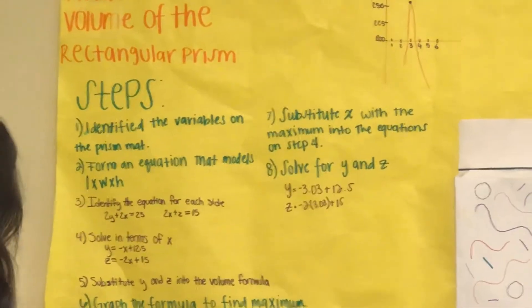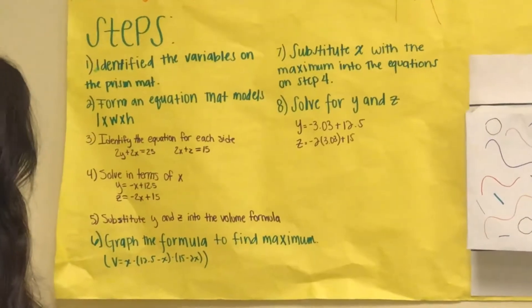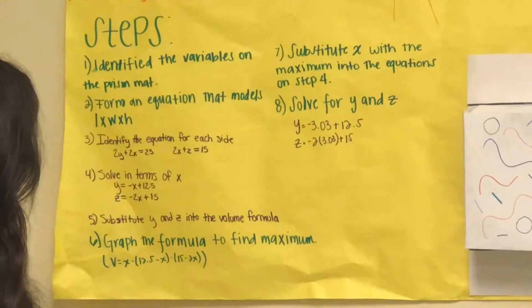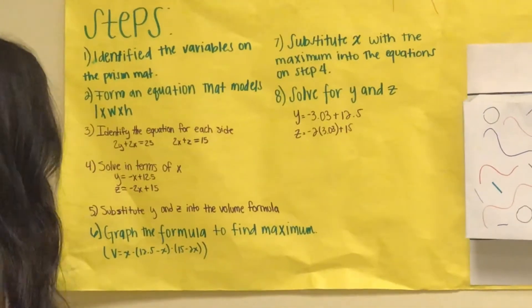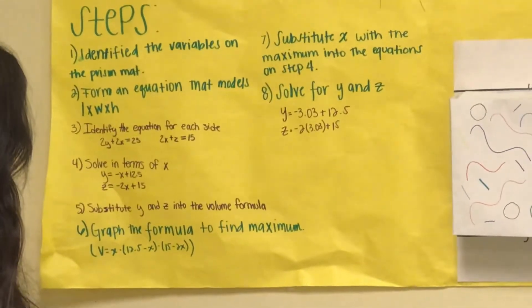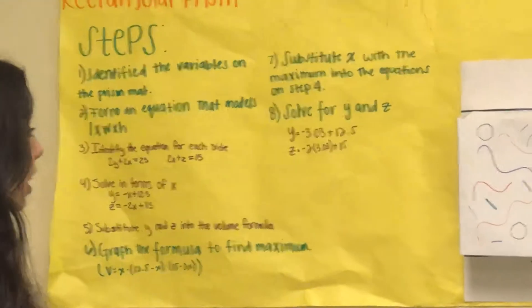Step number two is to form an equation that models length times width times height. Number three is to identify the equations for each side. One side was 2y plus 2x equals 25, and the other side was 2x plus z equals 15.